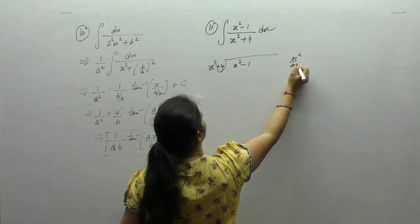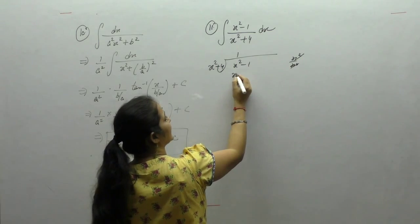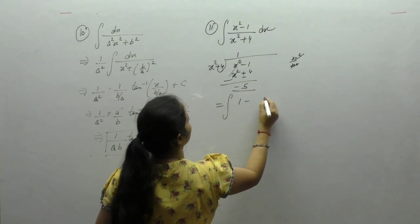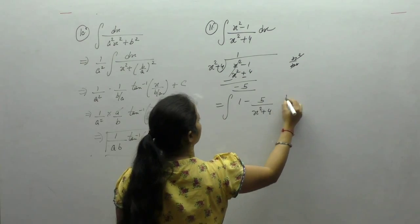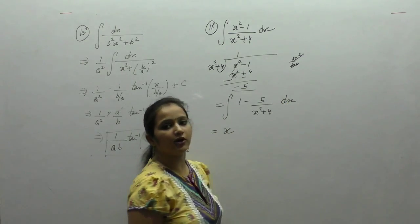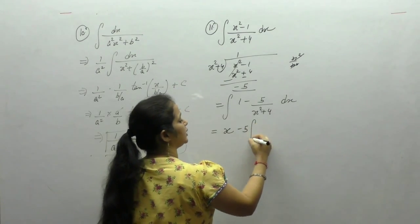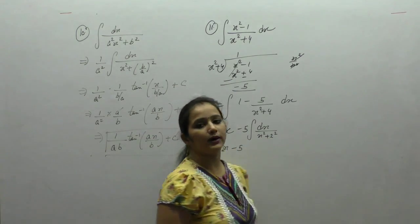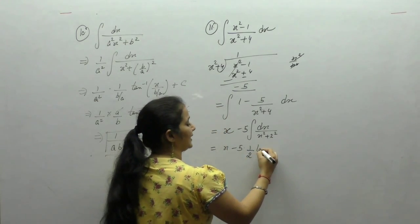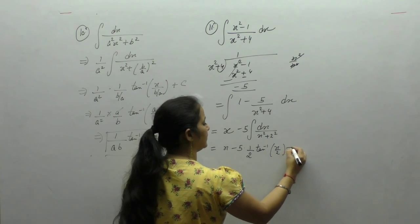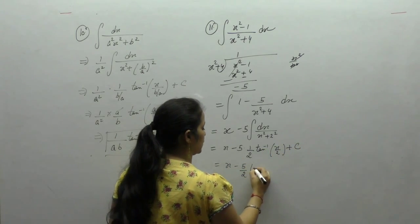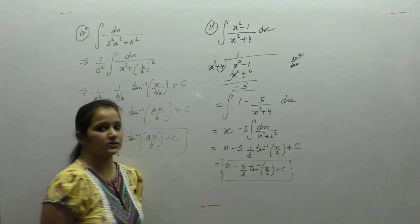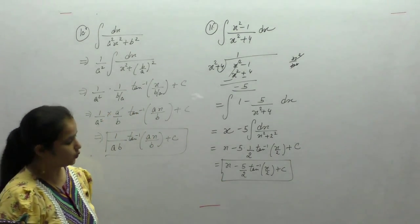Divide x square by x square, we get 1. Multiply 1 by x square; 4 into 1 is 4; remainder is minus 5. So we have 1 minus 5 upon (x square plus 4). Integral of 1 is x, and we get x minus 5 into dx upon (x square plus 2 square). Using the formula, integral of 1 upon (x square plus a square) is 1 upon a tan inverse (x upon a) plus c, giving x minus 5 by 2 times tan inverse (x by 2) plus c.